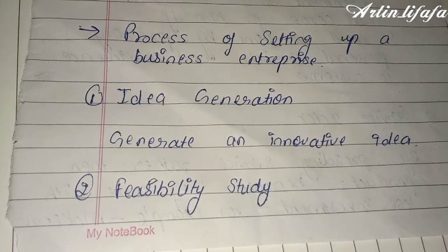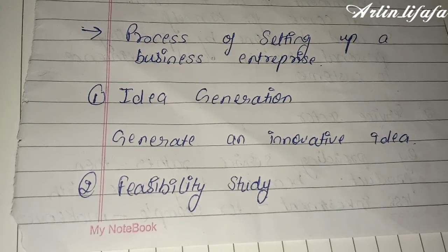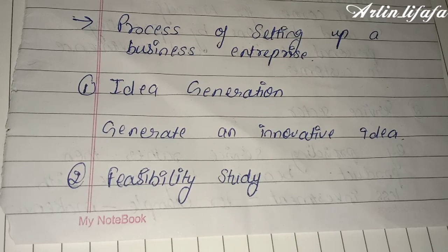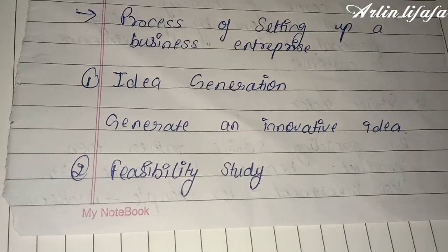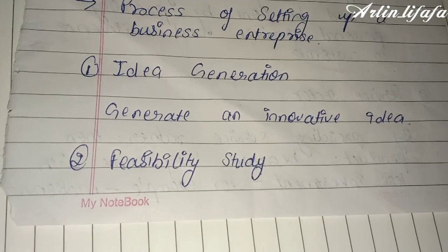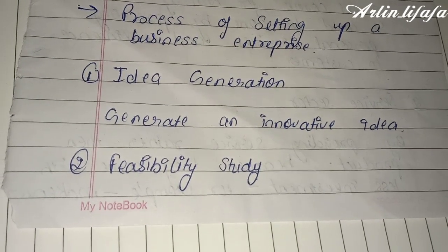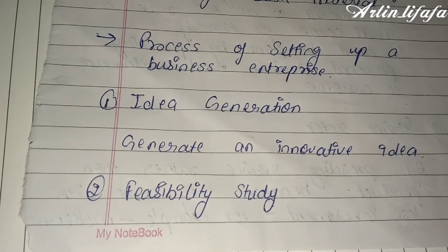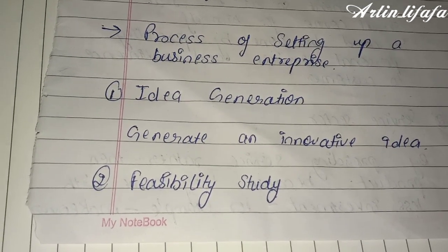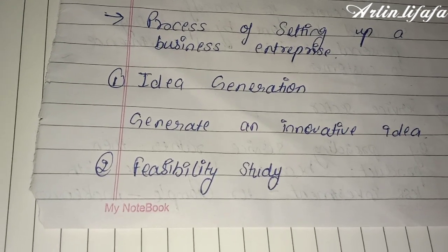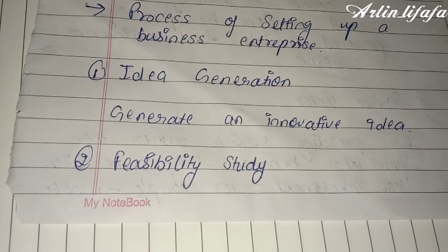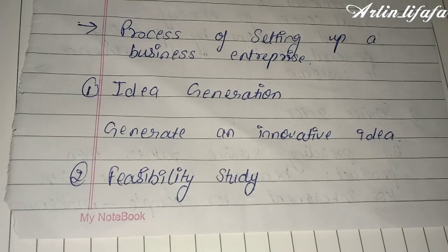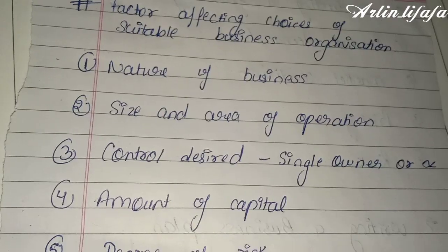The next topic is the process of a business enterprise. The process is simple: first is idea generation — coming up with an innovative idea — and second is a feasibility study, which checks whether the idea can be properly applied in the market and whether people will love it or not. First generate the idea, then check feasibility.